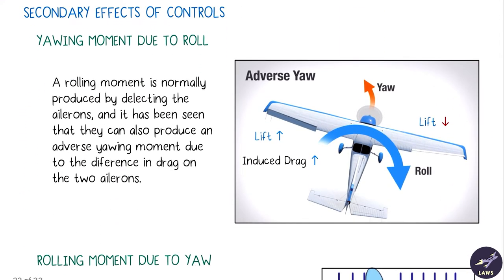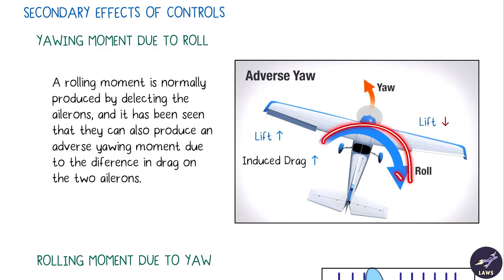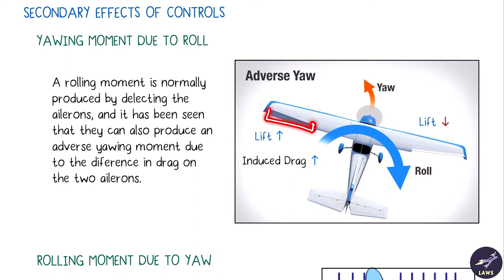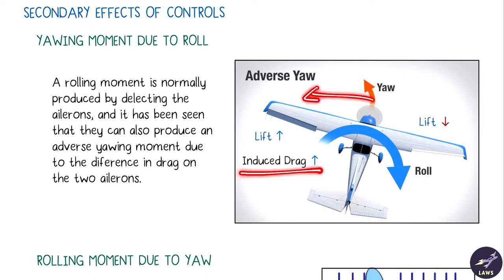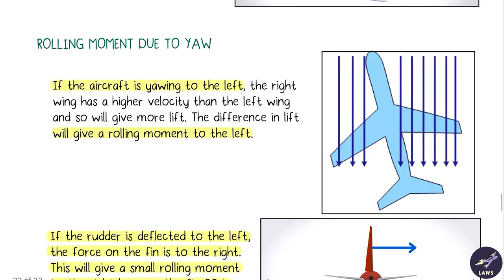Next we look at secondary effects of controls. The first is the yawing moment due to roll — adverse yaw. For example, if the aircraft is rolling to the right, the right aileron goes up reducing lift, while the left aileron goes down increasing lift and induced drag. Due to this increased induced drag on the left side, the aircraft yaws to the left.